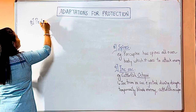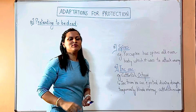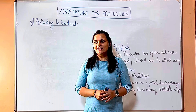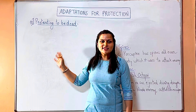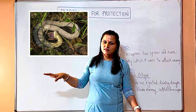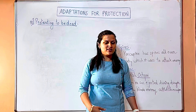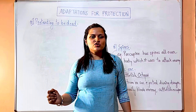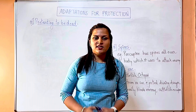Pretending to be dead: many snakes do this — they just pretend to be dead with no movement. When an enemy comes and sees that it appears dead, it will play around with it but the snake will stay completely still. Animals usually don't eat dead animals, so the enemy just leaves it and goes, and the snake then escapes.